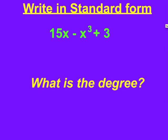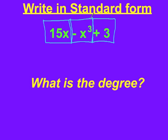First, write this in standard form: 15x minus 3x plus 3. To get it in standard form we write it from the highest degree to the smallest degree. We have three terms: 15x, negative x cubed, and positive 3. I box them up and I like to show the adding or subtracting sign in front of each term, because that helps determine if it's positive or negative. The degree is the highest exponent, and that's the 3, so the first thing we write is negative x cubed.